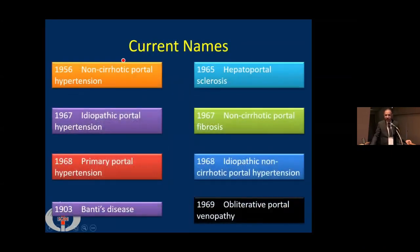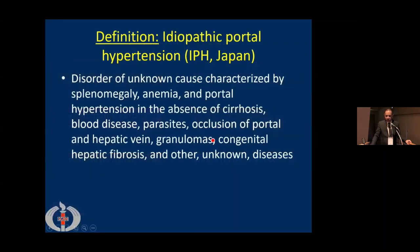Among the current names used across various countries are: non-cirrhotic portal hypertension, idiopathic portal hypertension, primary portal hypertension, idiopathic non-cirrhotic portal hypertension, and obliterative portal venopathy. The definition given by Japanese workers is a disorder of unknown cause characterized by splenomegaly, anemia, and portal hypertension, in absence of cirrhosis, blood disease, parasites, occlusion of portal and hepatic vein, granulomas, congenital hepatic fibrosis, and other unknown diseases.